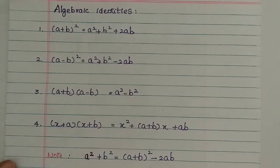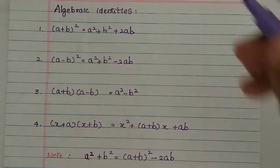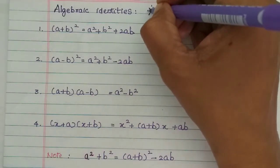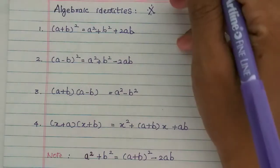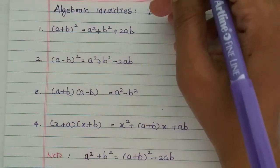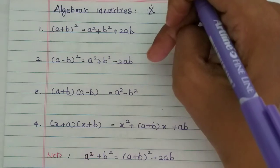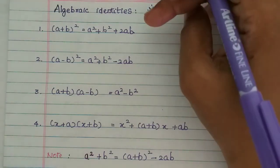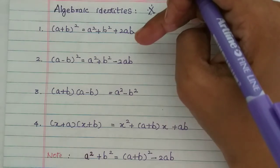Hi students! In this video, we will see the algebraic identities. The algebraic identities are very important. If you go to 10th, 11th, 12th, you can use the maximum 4 formulas repeatedly. The 4 formulas are very important.